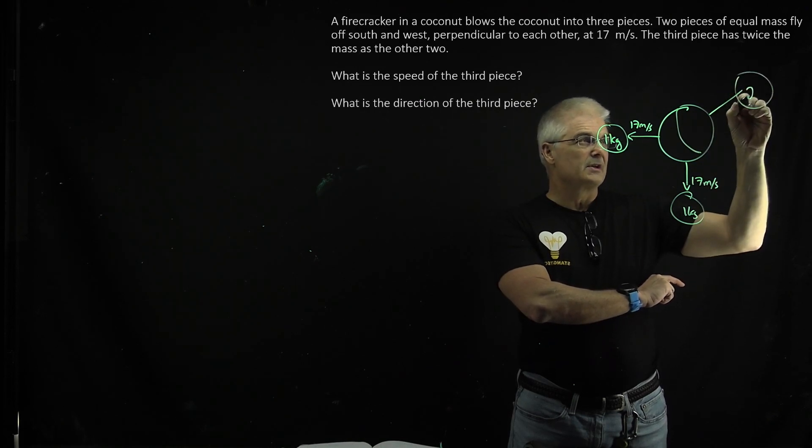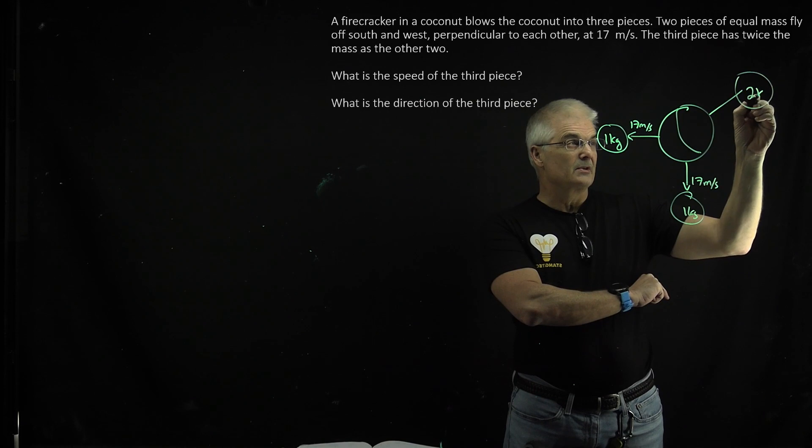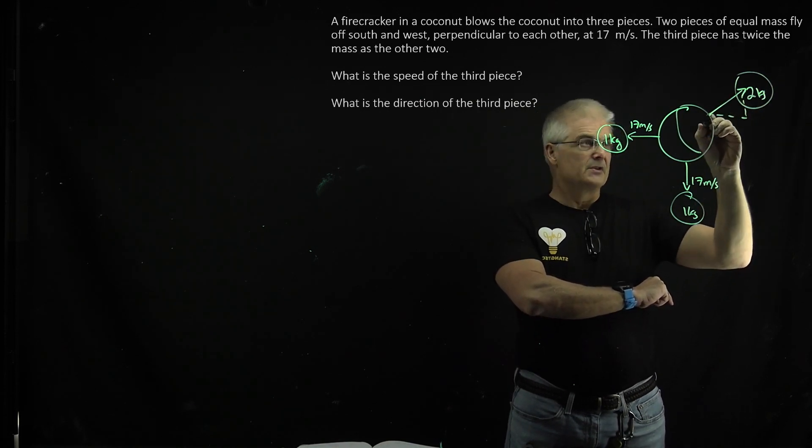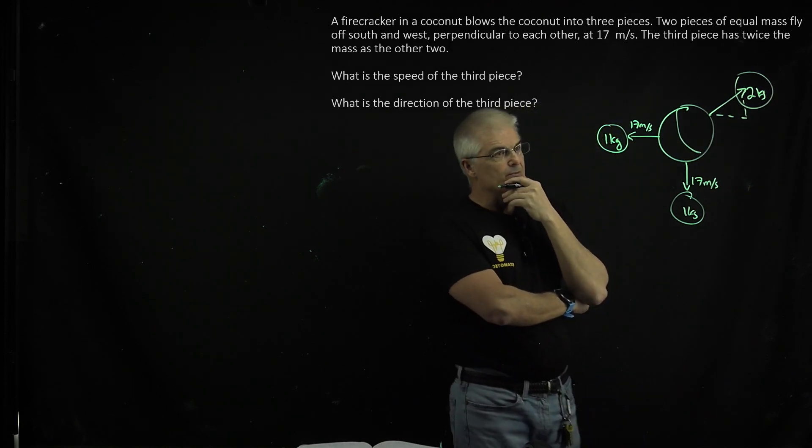And the third chunk, it says, has double the mass. So say that's two kilograms. And what we want to do is we want to find the speed and the angle that it comes off at.